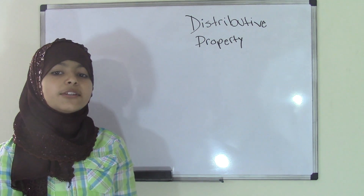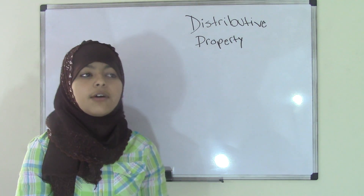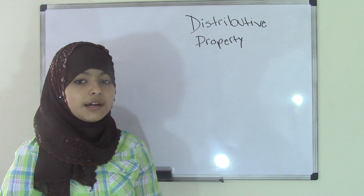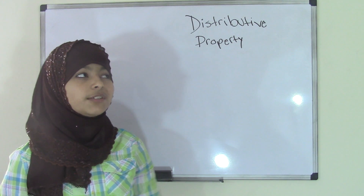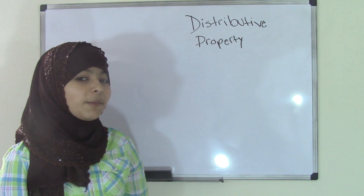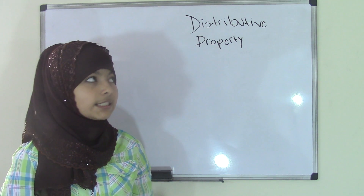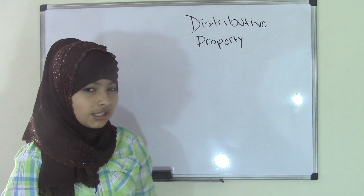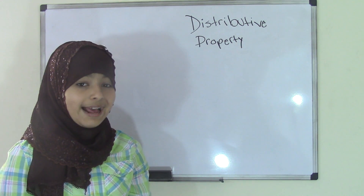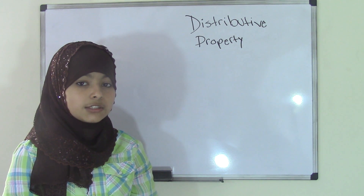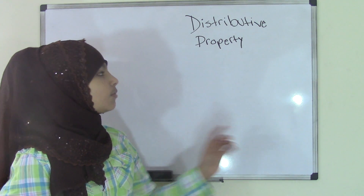Hi guys, today we'll be learning about the distributive property. The distributive property does come in multiplication because the topic we're covering currently is multiplication. However, distributive property is not one of the multiplication properties for a reason, because it's not usually used in the multiplication property. This property is mainly found in algebra, and we will cover that topic, but not for now if we're just in the 5th grade curriculum.